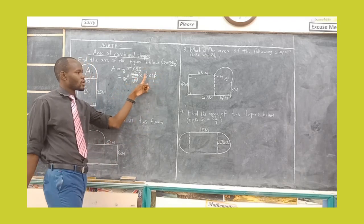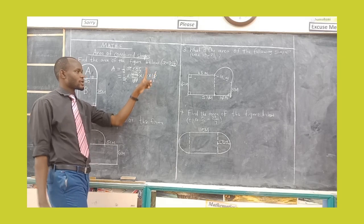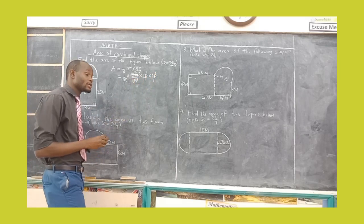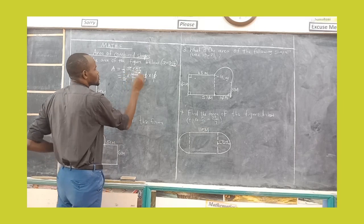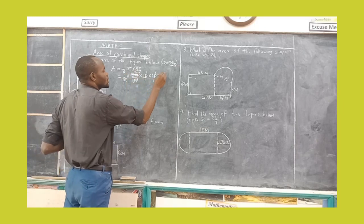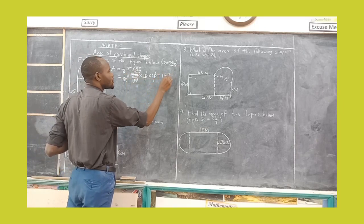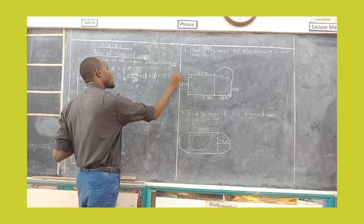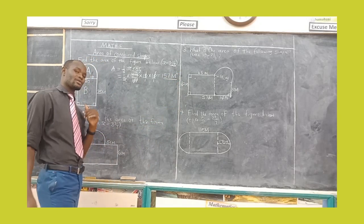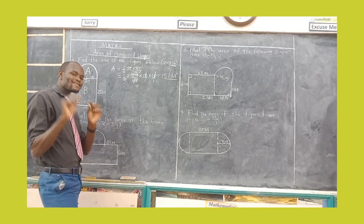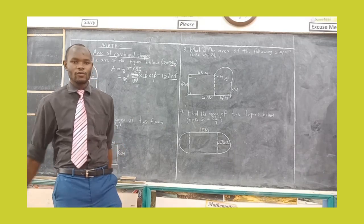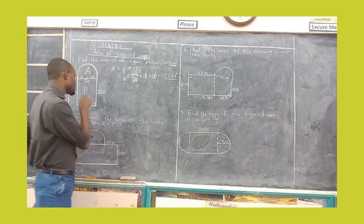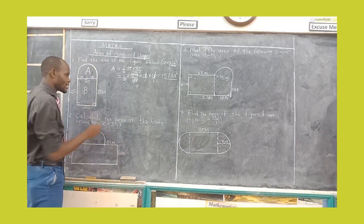We have cancelled two zeros in our numerator, you do the same in the denominator. So you get 1 times 157, you will get 157 meters squared. My friend, that is not the correct answer — that is just the area of one shape. We have another shape here which is a rectangle.